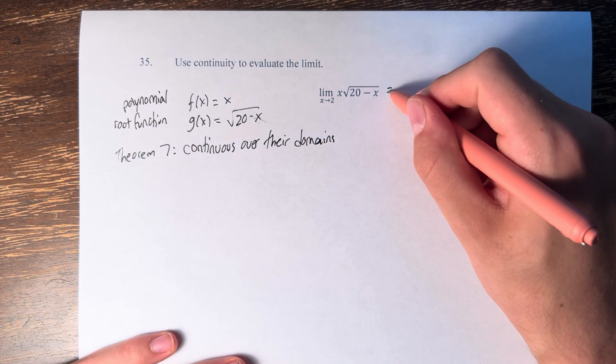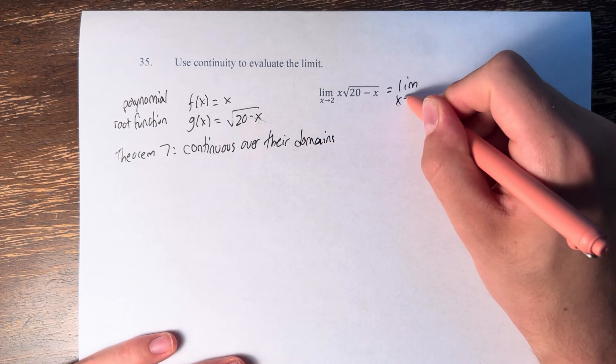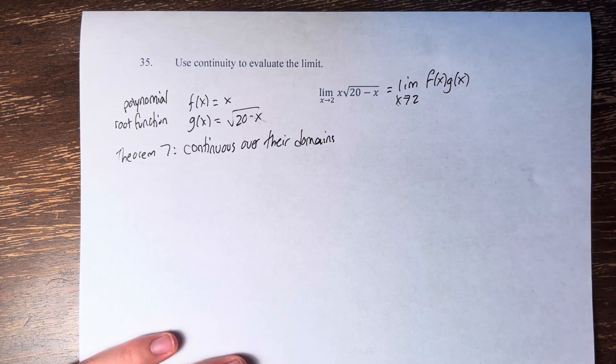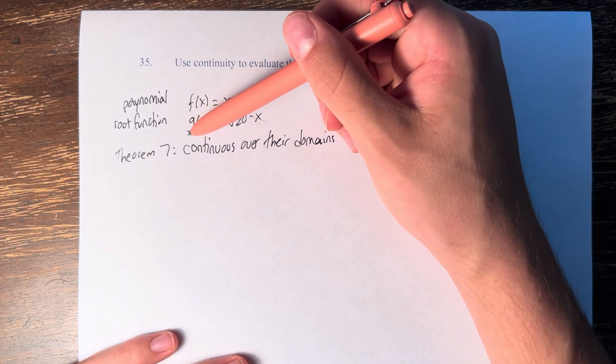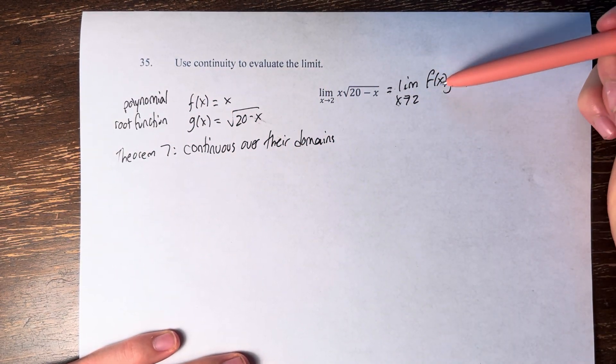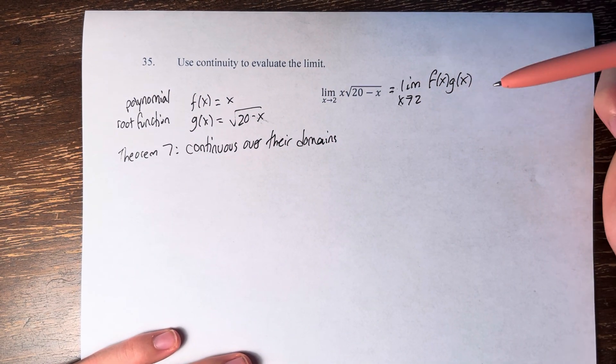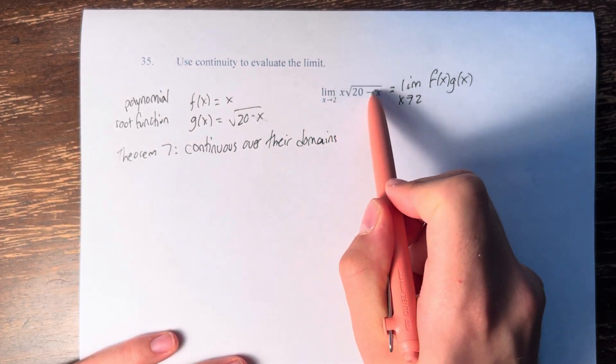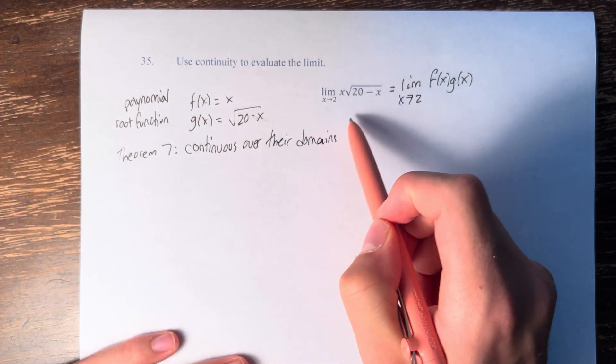And since this is equal to the limit as x approaches 2 of f of x times g of x, wherever f and g are continuous, their product is as well. Therefore, the limit as x approaches 2 of x times the square root of 20 minus x is continuous over its domain.